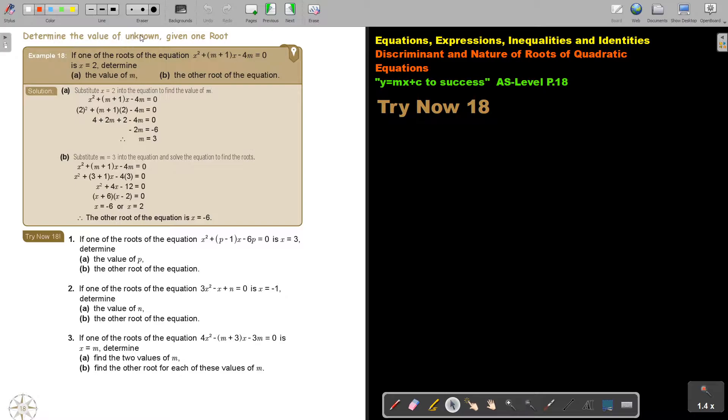Determine the value of an unknown given one root. So basically they will give you one of the values of x. That will be the solution of this equation, meaning that it will make the left-hand side equal to the right-hand side, and then by substituting it into that you will find the unknown and then you will also be able to find the other root.